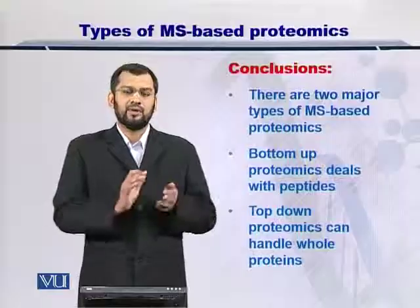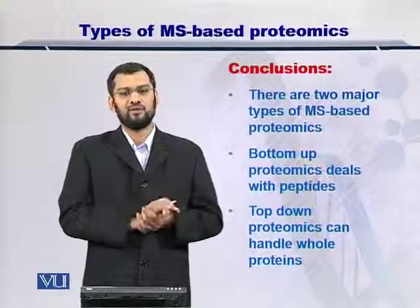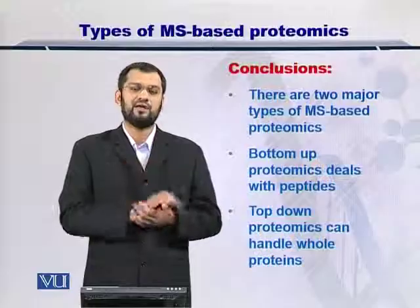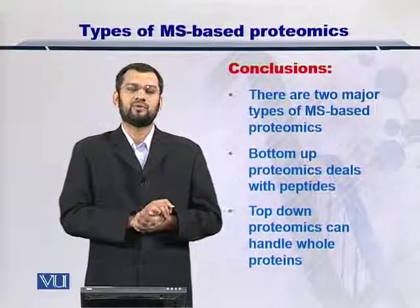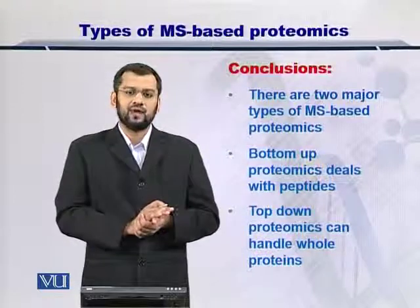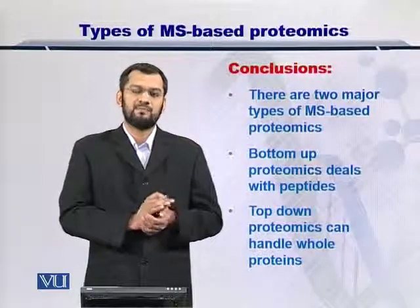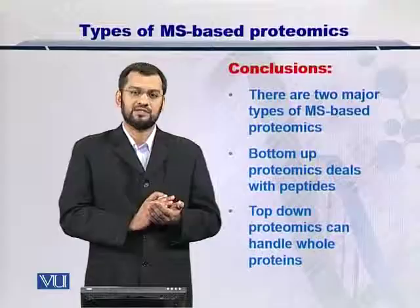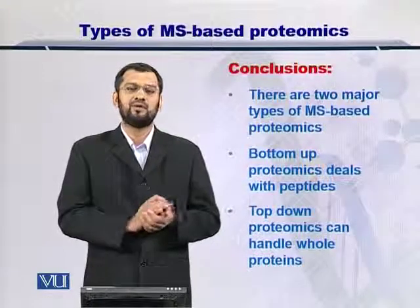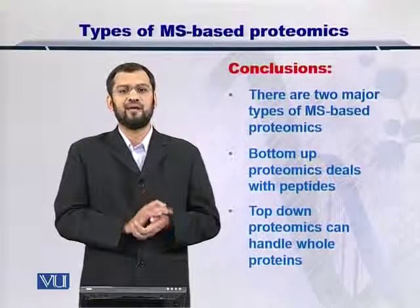Once you have measured the mass of the top-down proteomics peptides, you can do the same as in bottom-up proteomics: compare the peptide mass with the in silico digested masses from the protein sequence database. In conclusion, there are two major methods for MS-based proteomics. The first is the bottom-up approach, in which peptides are produced by enzymatic digestion of proteins and then measured. The second is the top-down approach, in which whole proteins are first analyzed for their mass, followed by fragmentation and peptide mass measurements.